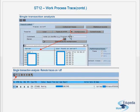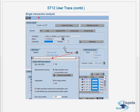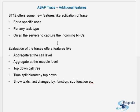ST12 offers new features like activation of trace for a specific user for any task type on all servers, to capture the incoming RFCs. When you do an ST12 trace, you can collect it for a particular user for any task type by using star, and on all servers to capture the incoming RFCs — since RFC calls can hit any server, you can use this trace to collect all incoming RFCs across all servers.